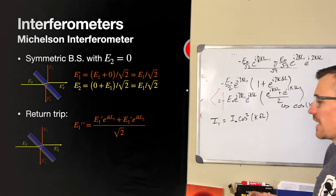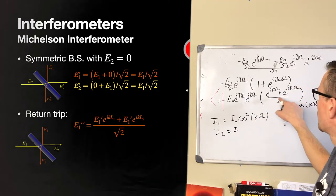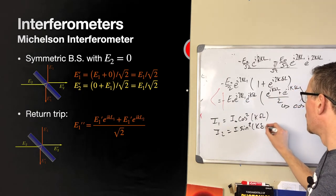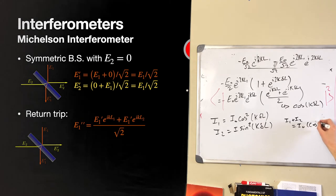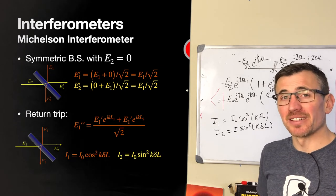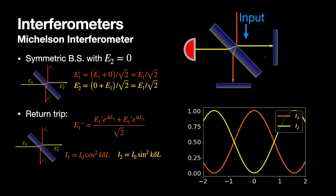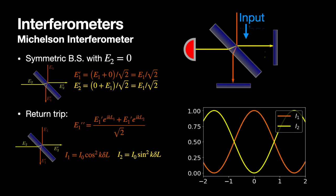For the second output field, there's an extra minus sign from a reflection, which turns the cosine into a sine. So I1 plus I2 equals I0 cosine squared plus sine squared of kL, which equals I0 — we get all the original power back. So we get cosine modulation in channel one and sine modulation in channel two. Moving the mirror back and forth, we'll see these fringes: I1 and I2 vary out of phase with each other.